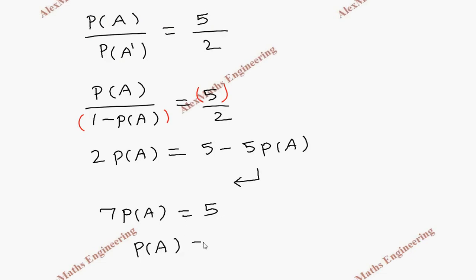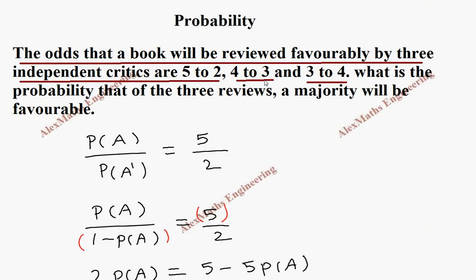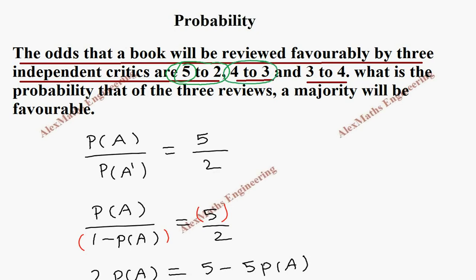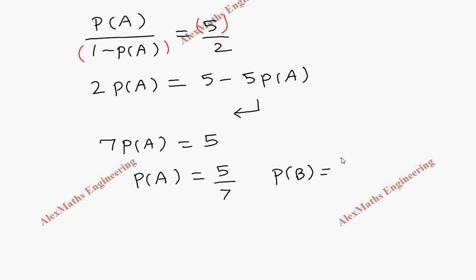In the same way, by working out, I can get the probability of the second critic B as 4 to 3. From 5 to 2, we keep this in the numerator and sum of this comes in the denominator. The same way we keep 4 in the numerator and sum of 4 and 3 comes in the denominator, so which is 4 by 7.